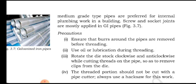Screwed and socket joints are mostly applied in GI pipes. We use these types of joints by making threads on the pipe — the fitting connects on the internal side using threads, and is tightened or loosened by screwing.